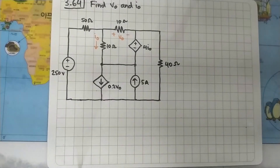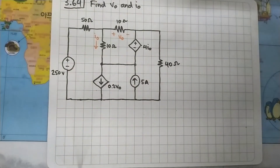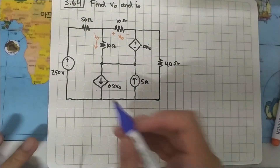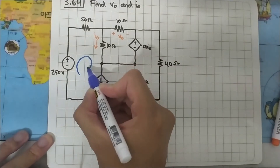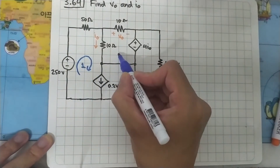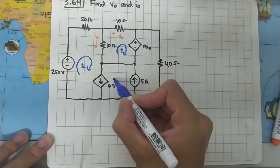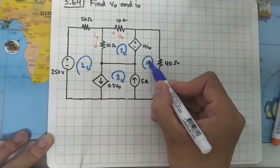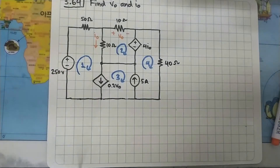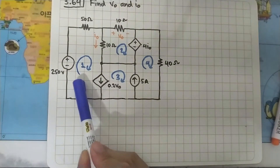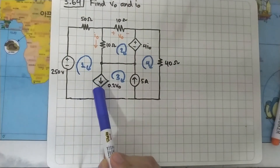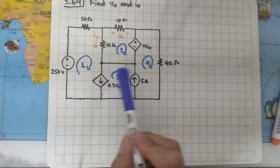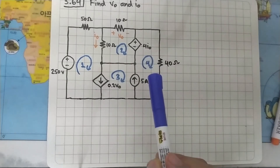We are going to do mesh analysis here. Let's name the loops: this one is loop 1, this is loop 2, this is loop 3, and this is loop 4. In loop 1 we cannot do a standard analysis because this is a current source — we cannot know the voltage across it. I3 is the same and I4 is the same.